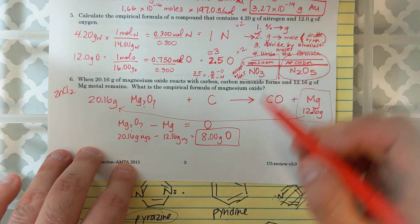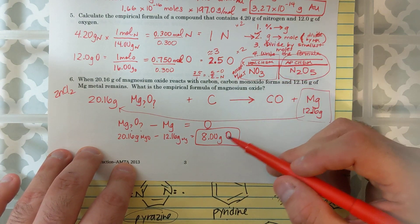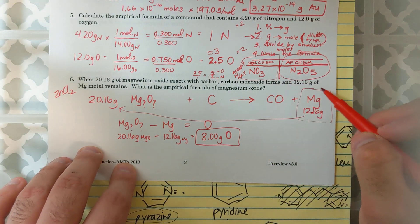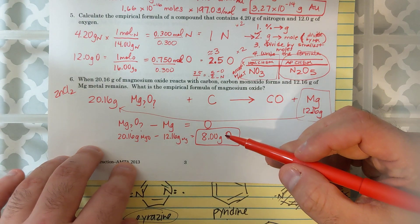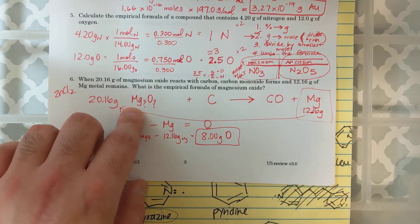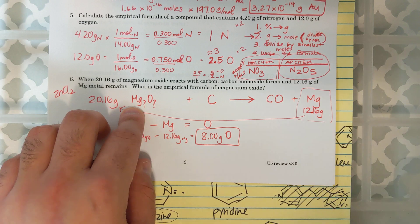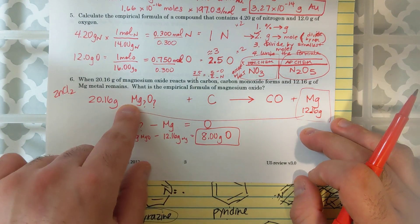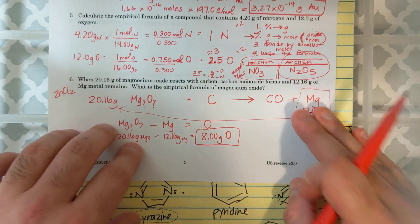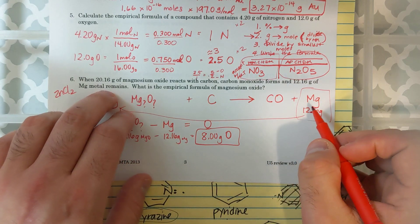And it says, what is the empirical formula of the magnesium oxide? Now, I'm back up here to the steps. I'm at step two. I don't have to worry about percentages. I have my mass of magnesium and I have my mass of oxygen that must have been in the magnesium oxide because of conservation of matter.